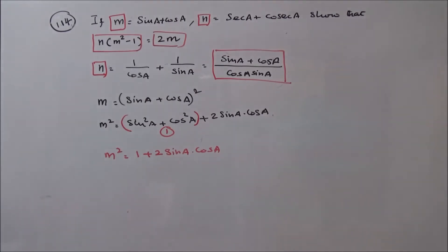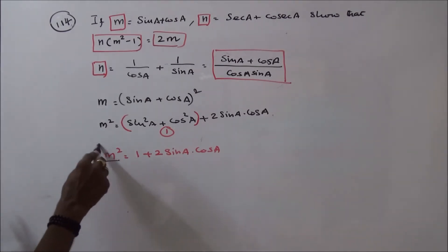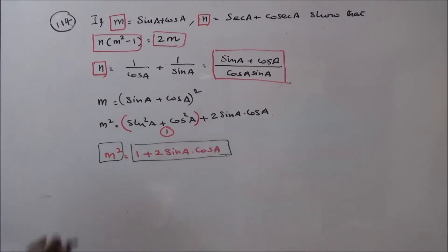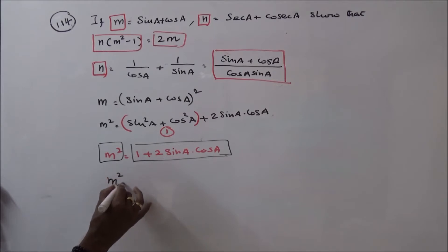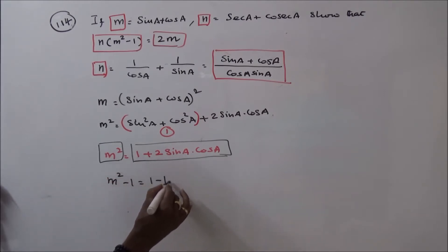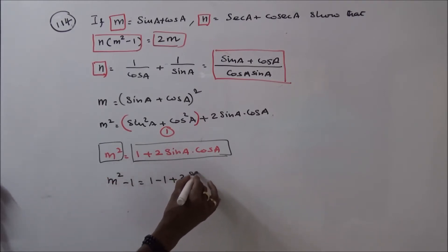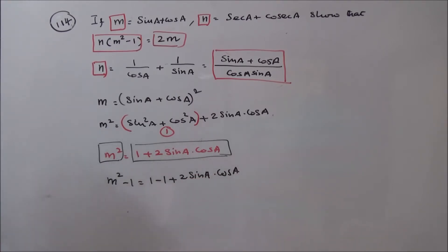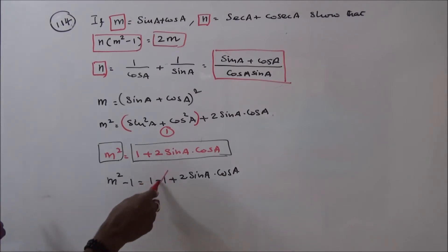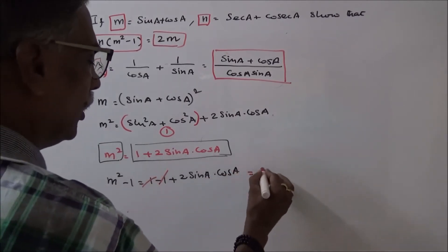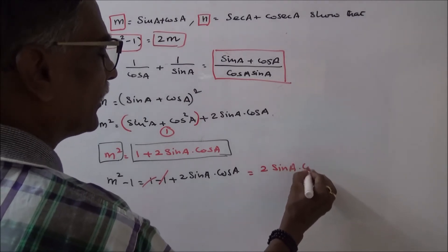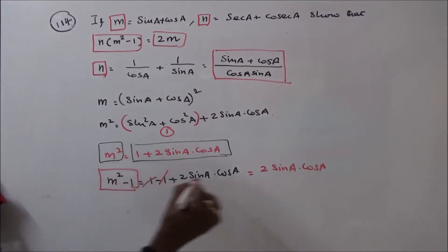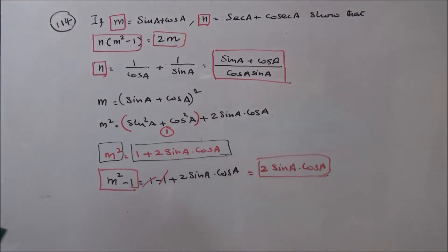That is m square. M square is equal to 1 plus 2 into sin a into cos a. Next, m square minus 1 is equal to 1 plus 2 into sin a into cos a minus 1. The plus 1 and minus 1 get cancelled, so this will become 2 sin a into cos a. So m square minus 1 is equal to 2 into sin a into cos a.